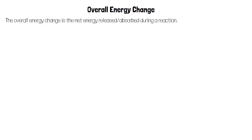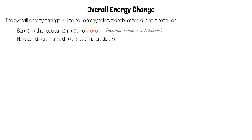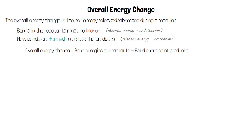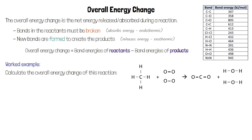The overall energy change is the net energy released or absorbed during a reaction. Bonds in the reactants must be broken, which is endothermic. The atoms are then rearranged and new bonds are formed to create the products, which is exothermic. The overall energy change equals the bond energies of the reactants minus the bond energies of the products. For example, let's calculate the overall energy change of a reaction using a table of bond energies.